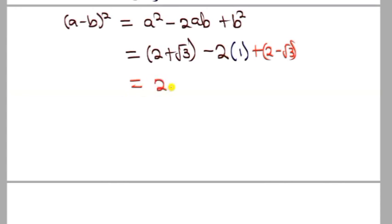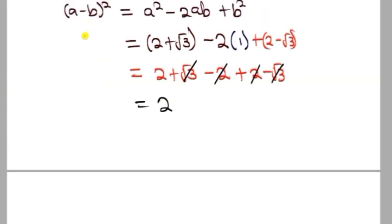So (a - b)² = (2 + √3) - 2(1) + (2 - √3) = 2 + √3 - 2 + 2 - √3 = 2.